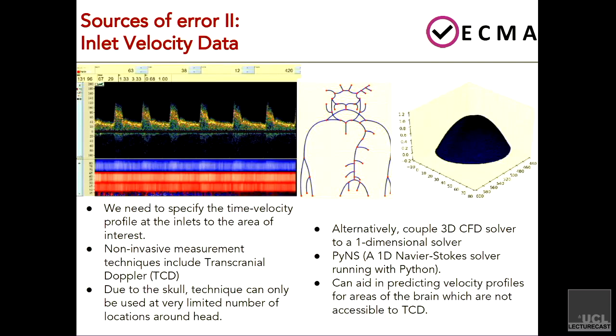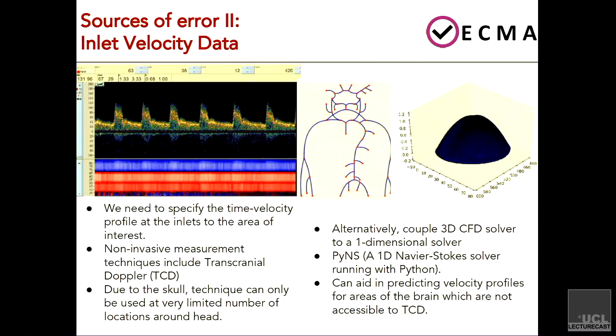Another source of error is the velocity profile at the inlets. One way is non-invasively by using a transcranial Doppler measurement. That's not great, because you can only shine it through holes in the skull effectively, so you can typically only get measurements in, for example, the middle cerebral artery by pointing it straight back through the ear. It's kind of noisy data, but it's non-invasive. You can also do phase-contrast MRI. When we can't do this, we do something which was mentioned earlier — you can use a 1D model of the whole body and use that to create your input conditions. But obviously there's a source of error here as well.